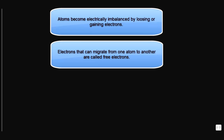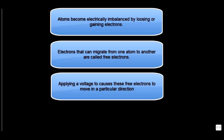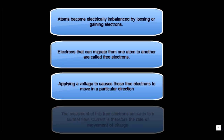We all know that it's possible for an atom to lose or gain an electron. If an electrical voltage is applied across a material that has free electrons, the electrons tend to move in a certain direction. This movement of electrons is what we call electricity.